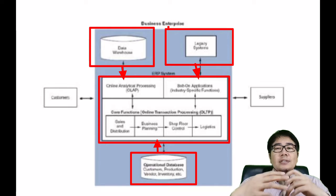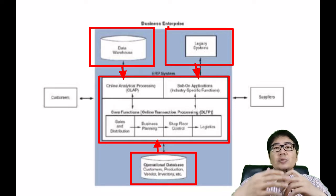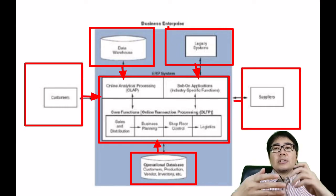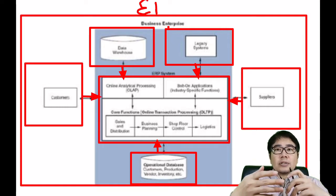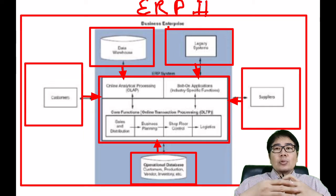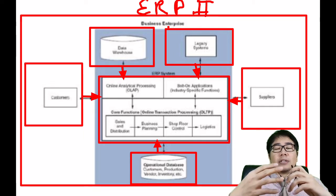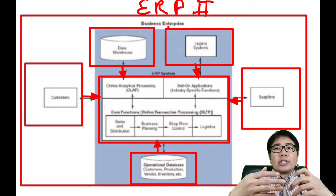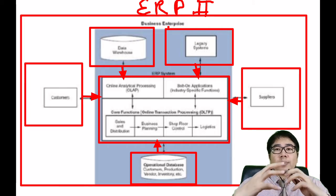ERP integrates third parties such as customers and suppliers. In ERP 2, they integrated the customer relationship management module and the supply chain management module into one big ERP system.